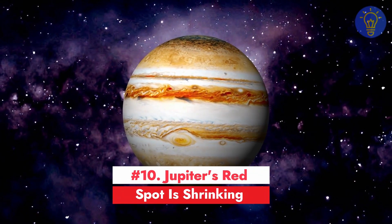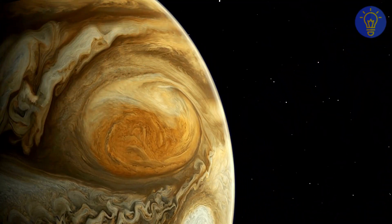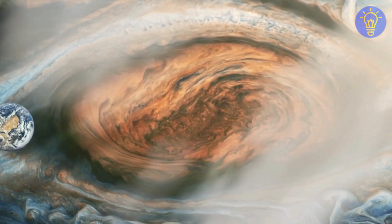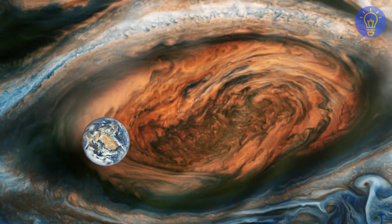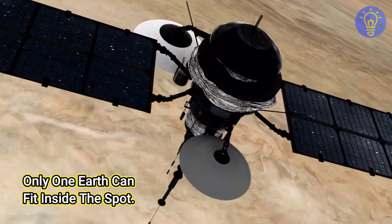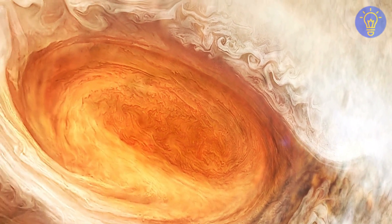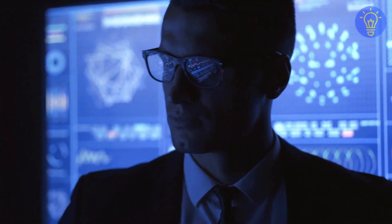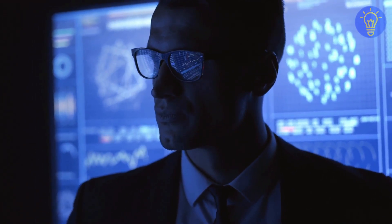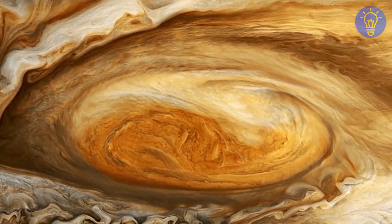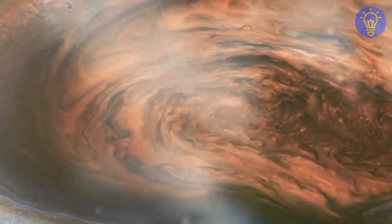Number 10. Jupiter's red spot is shrinking. Jupiter's famous red spot has been shrinking over the past few decades. This spot on the planet is a giant spinning storm that used to be able to fit about three Earths. Now, according to NASA, only one Earth can fit inside the spot. Interestingly enough, as the storm is shrinking in width, it's growing taller in length. In 2022, scientists are still stumped as to why this phenomenon is occurring in the first place, but some theorize that it may have to do with jet streams on Jupiter that have changed direction or location.